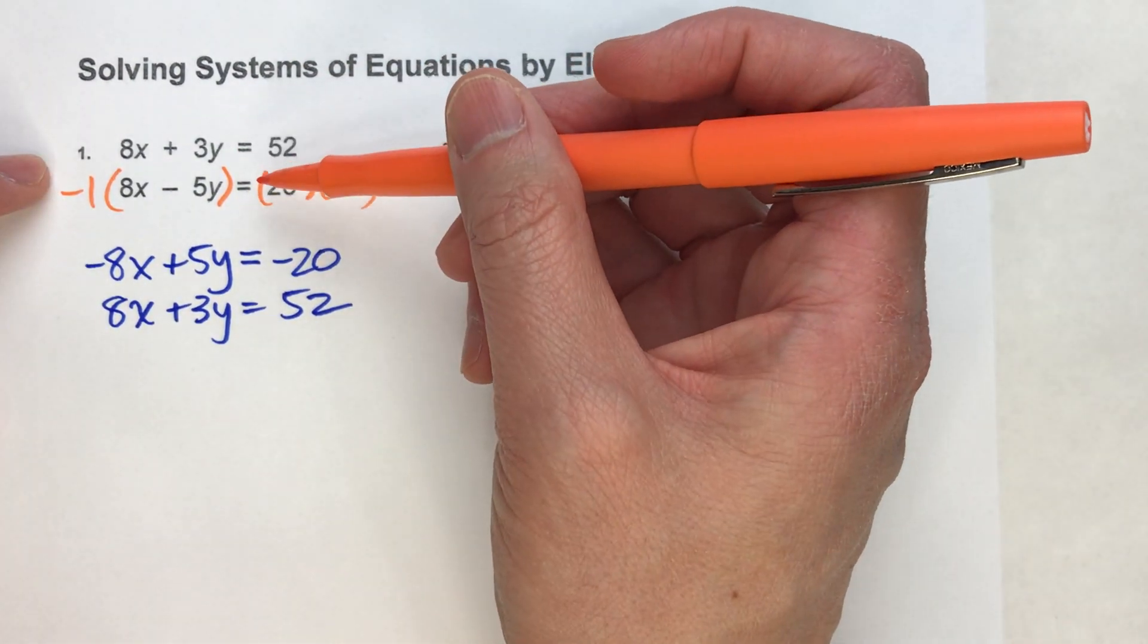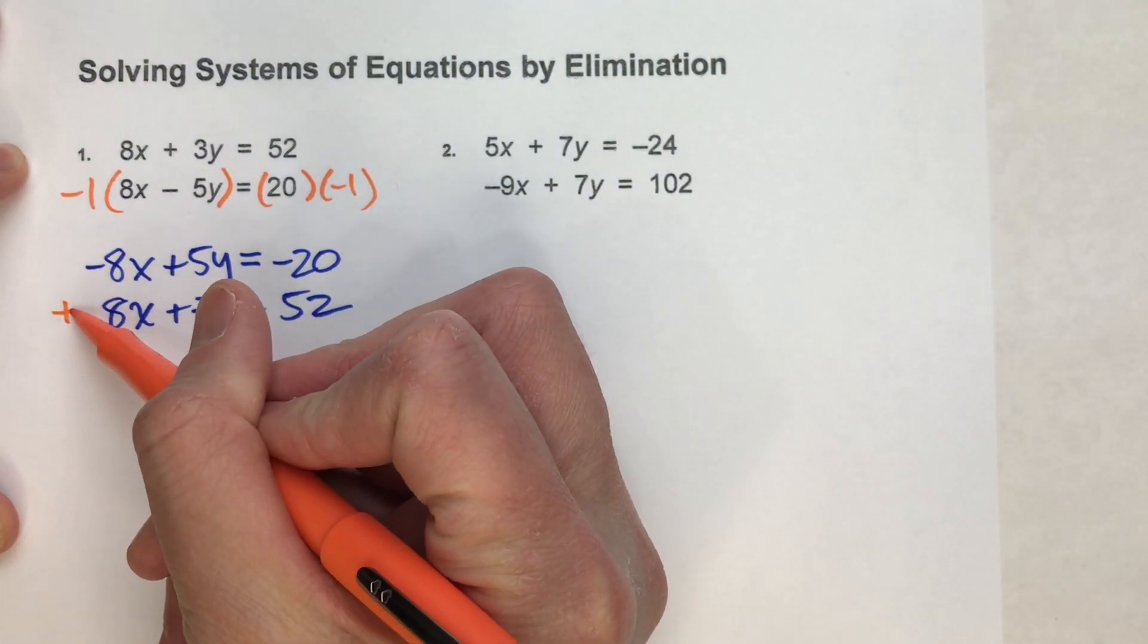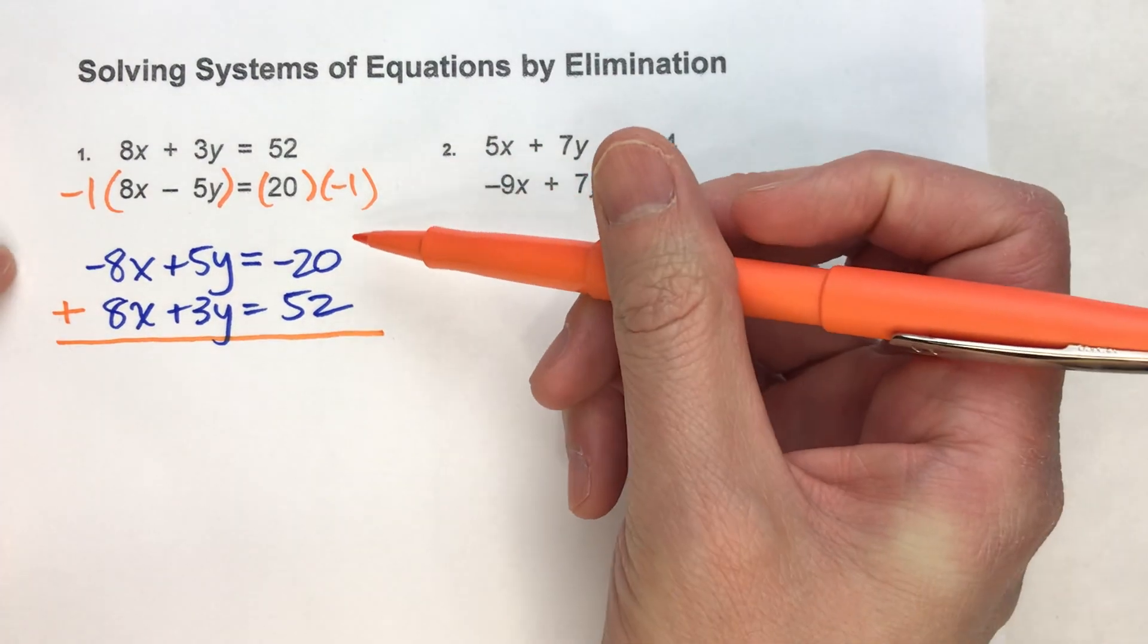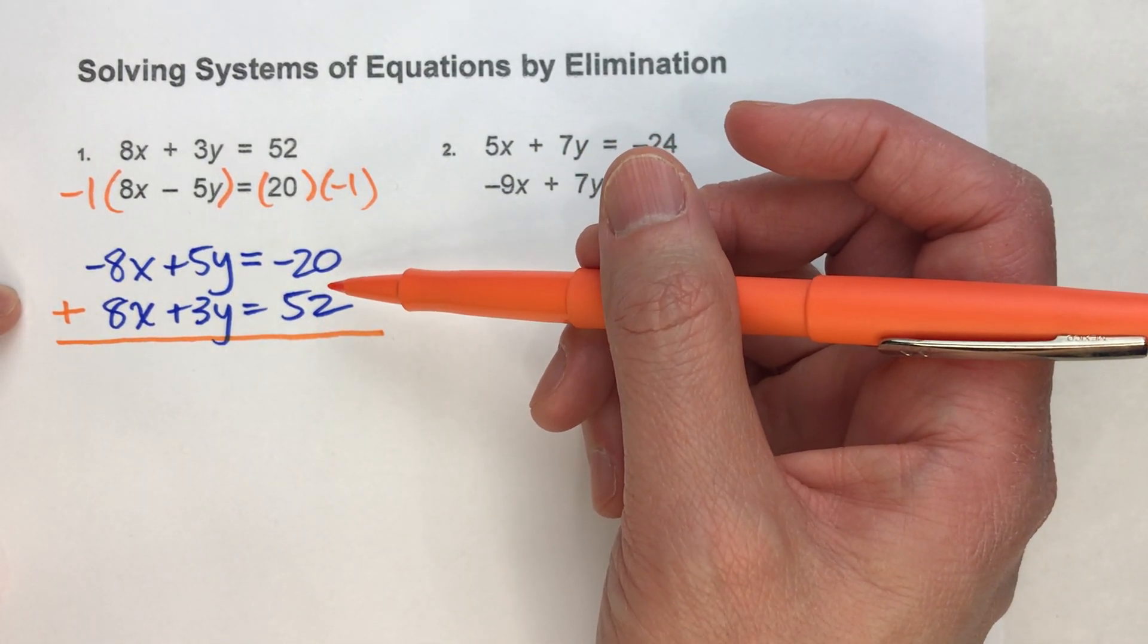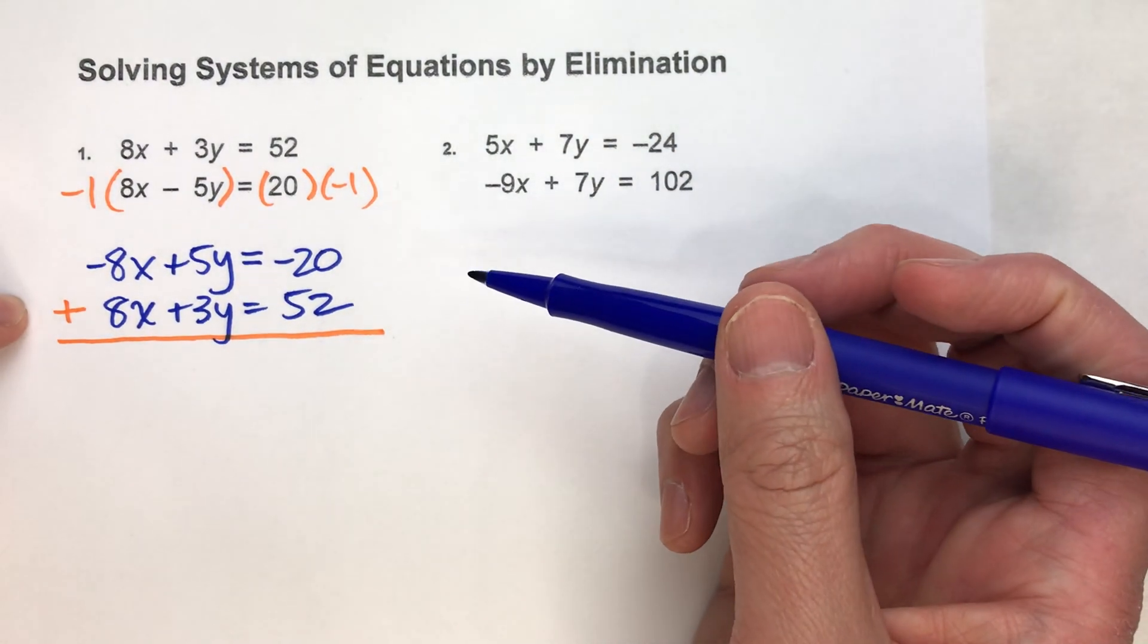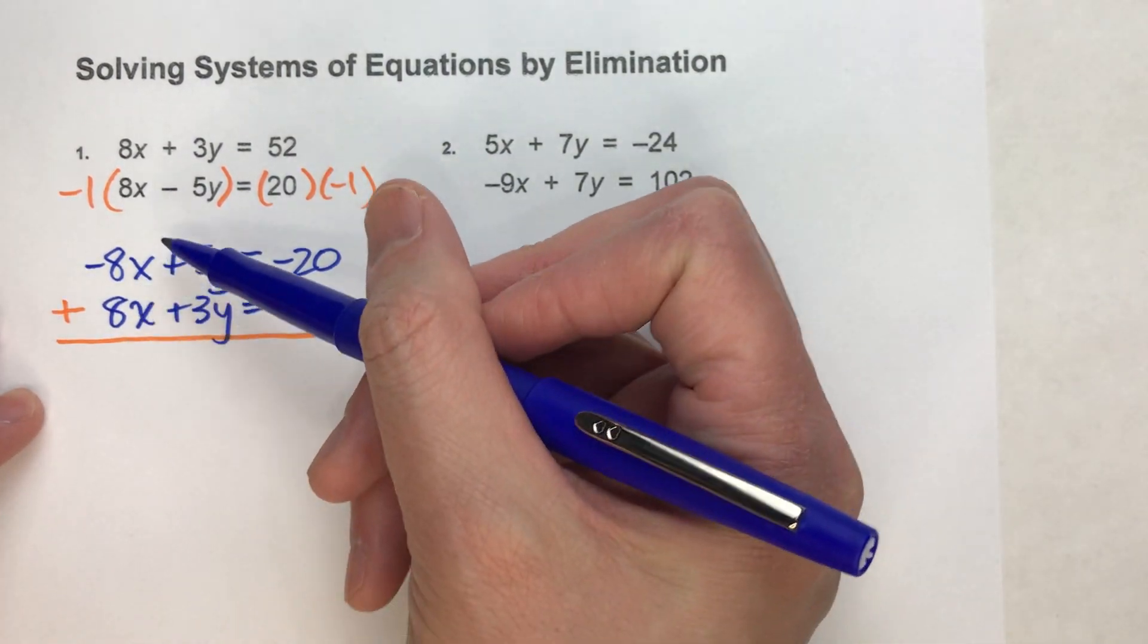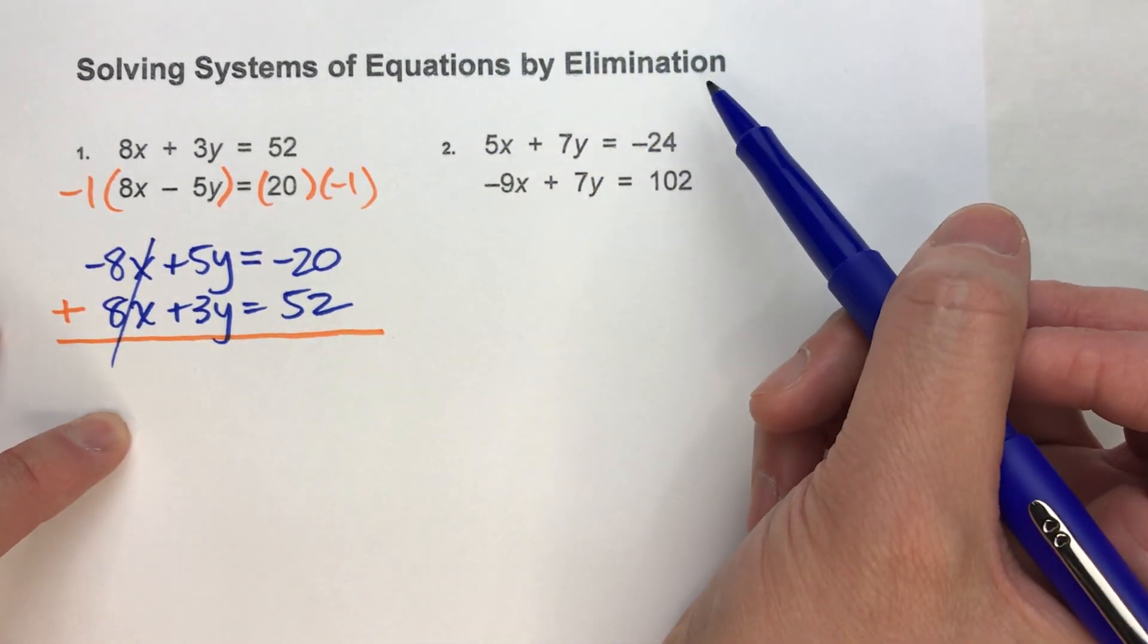Now, could you have just subtracted the two equations and done the same thing? Yeah, but I kind of like this idea of multiplying 1 by negative 1 and adding because subtracting negative numbers gets a little confusing and kids mess that up a lot. So this way is a little more foolproof. So watch what happens when I add them. Negative 8x's plus 8x's leave me with no x's. They are eliminated. That's why we call this the elimination method.